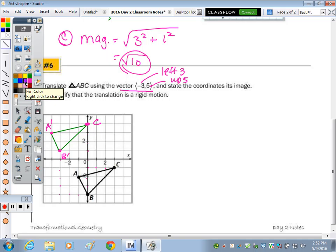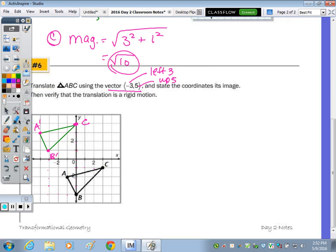Now, the next part says to, after you translate the triangle, and we have to state the coordinates of its image. So we do have to state the A prime, B prime, C prime. So let's do C. C is (0, 4), good. B is (-3, 1). A is (-4, 3).